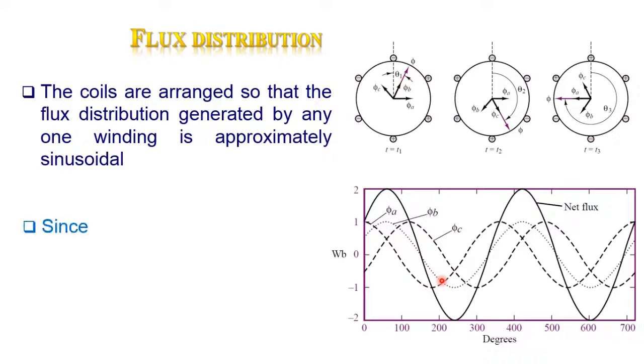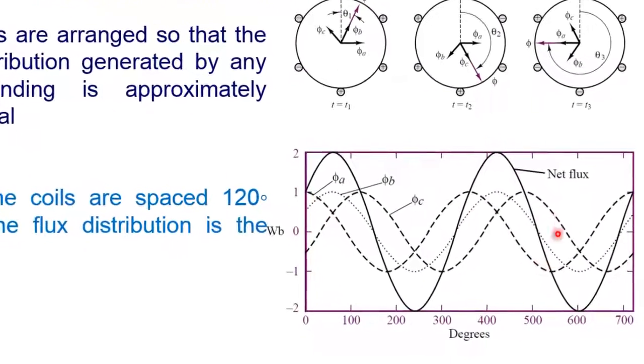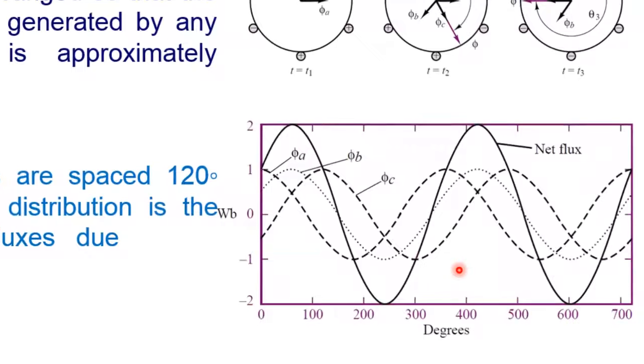Since the coils are spaced 120 degrees apart, the flux distribution is the sum of the fluxes of all three windings flux. Therefore the net flux in three-phase motor is constantly rotating vector with constant amplitude.